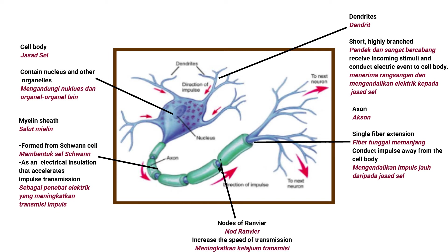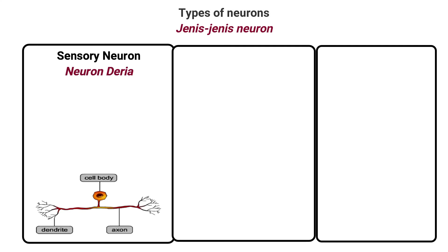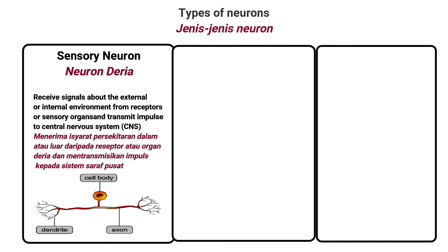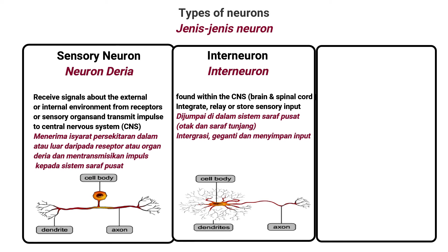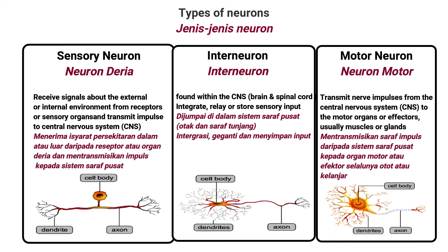The node of Ranvier increases the speed of transmission. Sensory neurons receive signals about the external or internal environment from receptors or sensory organs and transmit impulses to the central nervous system. Interneurons, within the central nervous system consisting of brain and spinal cord, integrate, relay, and store sensory input. Motor neurons transmit nerve impulses from the central nervous system to motor organs or effectors, usually muscles or glands.